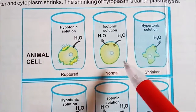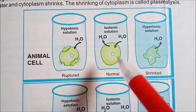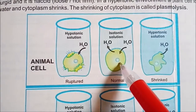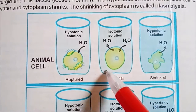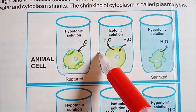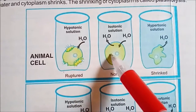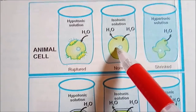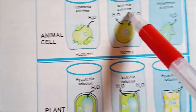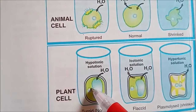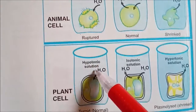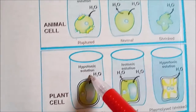Isotonic solution mein cell normal rahega — isotonic means cell ke andar aur bahar environment ki concentration same hai. So isotonic environment animal cells ke liye requirement hai. Plant cell ke liye kya requirement hai? Plant cell ke liye hypotonic solution honi chahiye — plant cell ke bahar ka environment hypotonic hona chahiye.